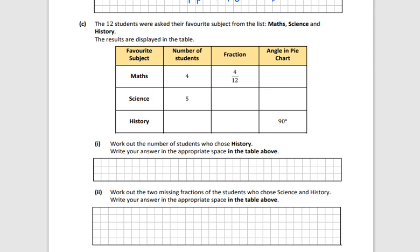Here, how many did, well, it's easiest to fill in history for us. There's 12 altogether. 4 did maths. 5 did science. Then there's 3 left. So 3. This has to be 5 out of 12. And then this has to be 3 out of 12.